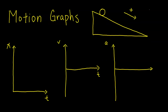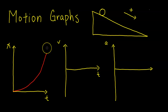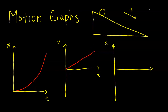Now we're going to look at the motion graphs for the ball rolling down a ramp. Once again, down the ramp is positive. On a position graph, the ball going faster and faster produces a curved line that gets steeper and steeper. The velocity graph is going to be a straight line at an angle, which tells us the velocity is increasing at a constant rate. The acceleration is the rate at which velocity changes, and since velocity changes at a constant rate, the acceleration is constant — a horizontal line.